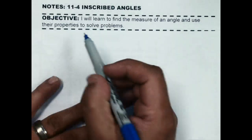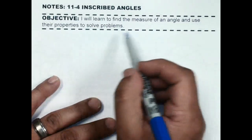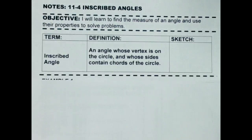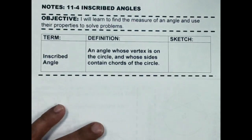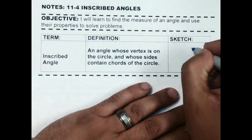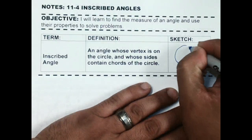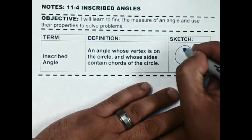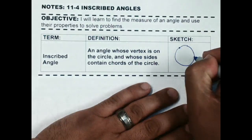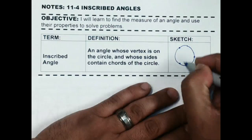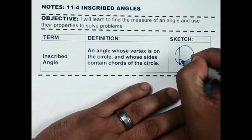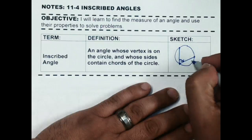Today we're talking about inscribed angles, and we're going to learn about how to find the measure of inscribed angles and use that to solve different problems. An inscribed angle is an angle formed on the edge of the circle. If you pick three points on the circle and one of those is the vertex, the angle formed at that vertex is what we call an inscribed angle.